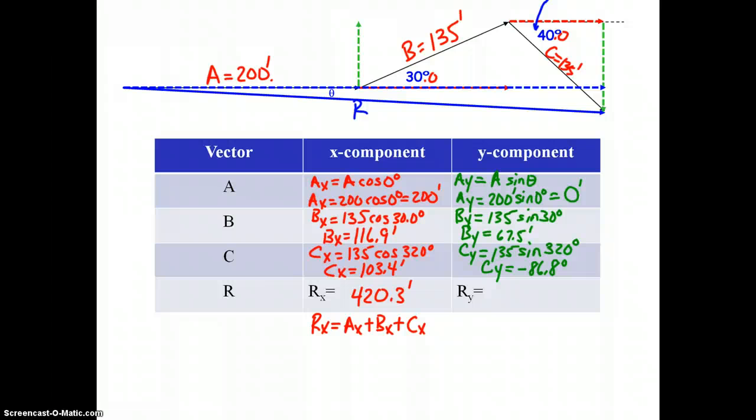If you add across that blue dash vector, which is Rx, you can see how it's the sum of all those x components. Likewise, Ry is going to be Ay plus By plus Cy: 0 plus 67.5 minus 86.8 gives us negative 19.3 feet. That would be this component we would label Ry. If you can see what happened here, it went up 67.5 feet vertically and then came back 86.8 feet down, giving us a net y displacement of negative 19.3 feet.